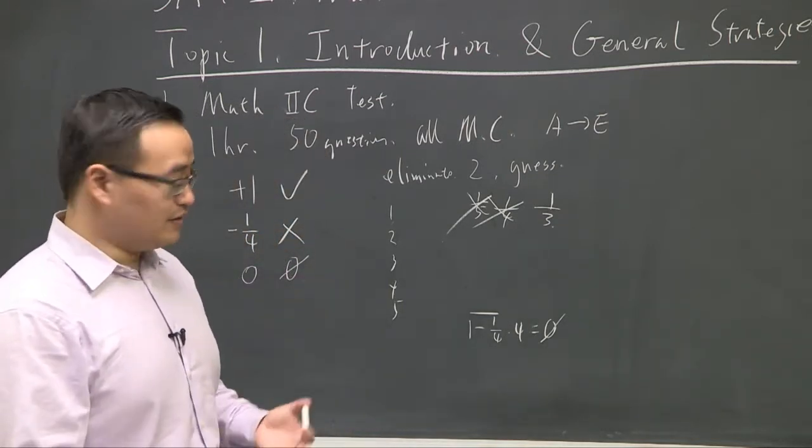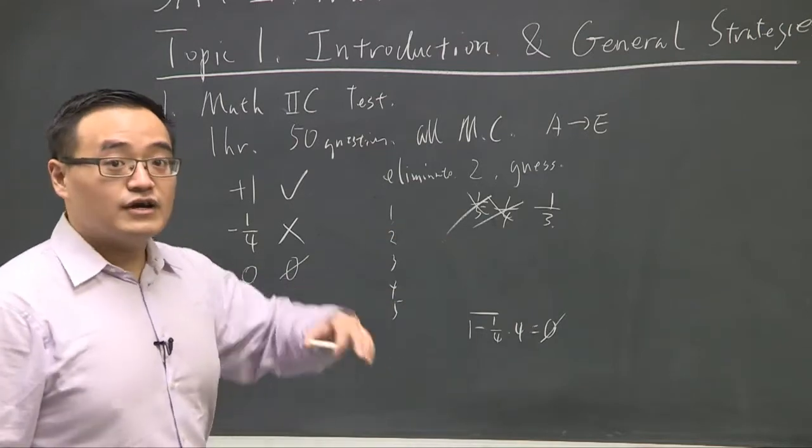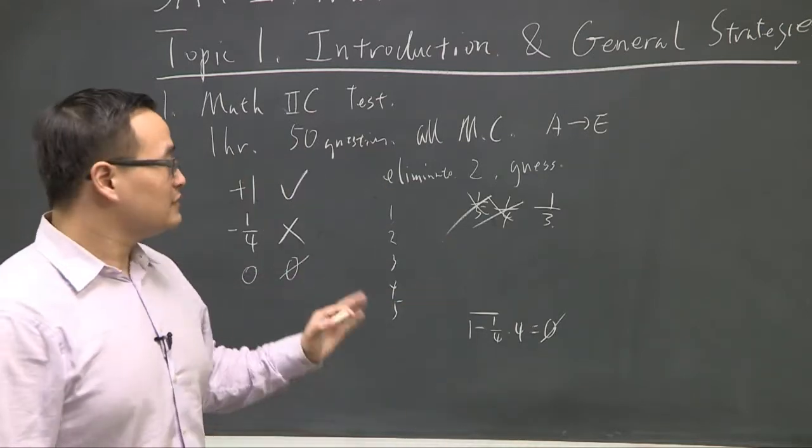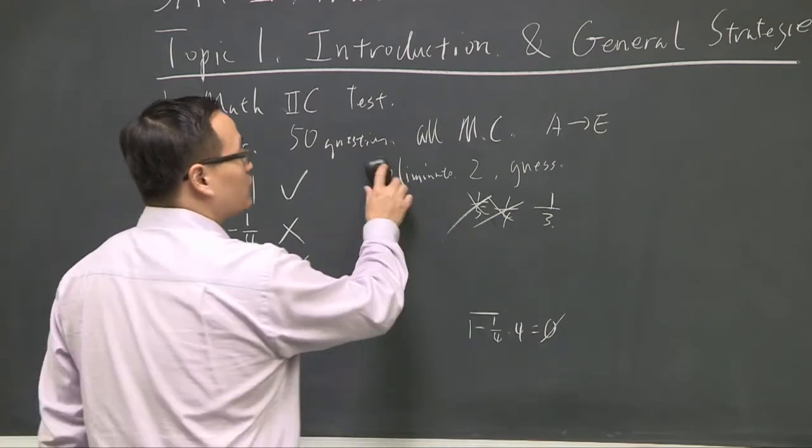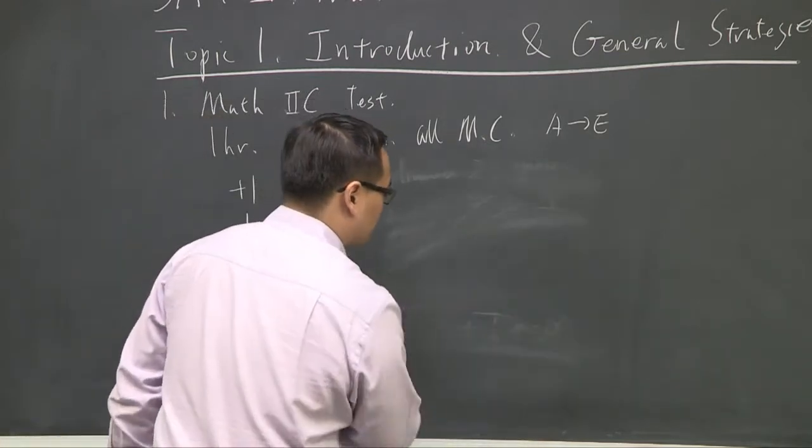I mean, you hear a lot of things say, people say, you know, school of thought say, don't guess at all. Some people say, I guess randomly. No. Eliminate at least two. Eliminate at least two answers before you guess. Now, how does this get translated?